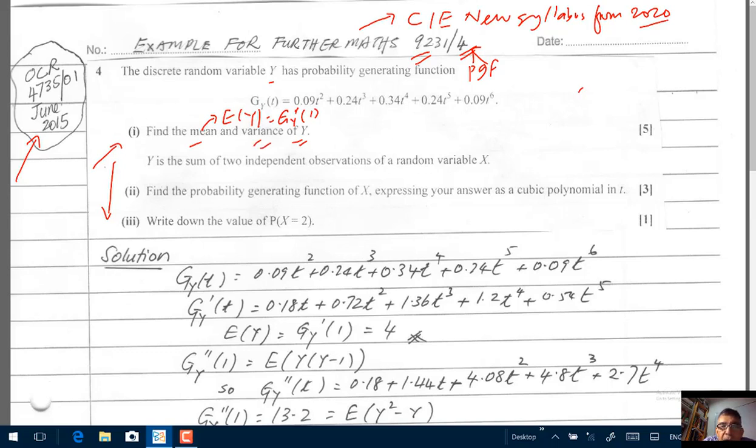Then to find the variance of Y, first off we need to find this, which is expected value of Y² minus Y, which is the second order derivative of this g_y(t), and you plug in the value of 1. So once you find the expected value of Y² minus Y, then we can use the formula for variance, which is the expected value of Y² minus the expected value of Y, whole thing squared.